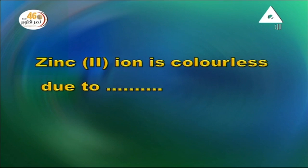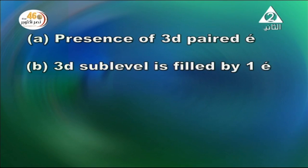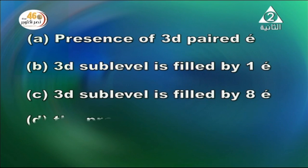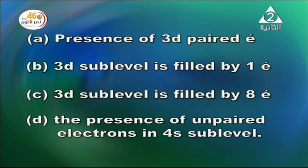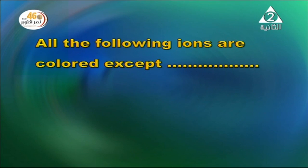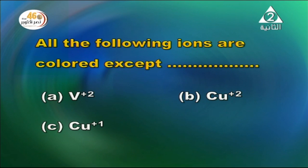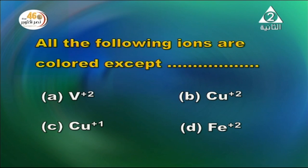MCQ: Zinc ion (Zn2+) is colorless due to the presence of 3d paired electrons (completely filled D sub-level). All the following ions are colored except: vanadium(2+), Cu2+, Cu+, Fe2+ — the answer is Cu+, which has a completely filled 3d10 sub-level and no unpaired electrons.